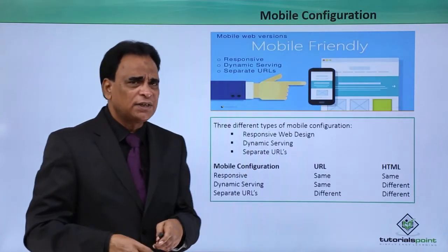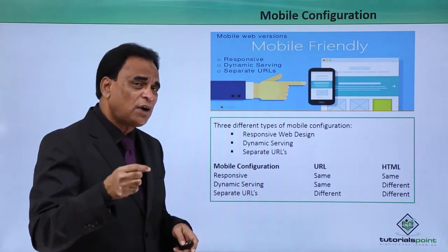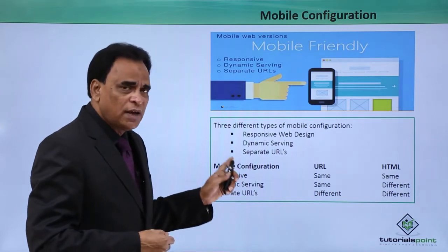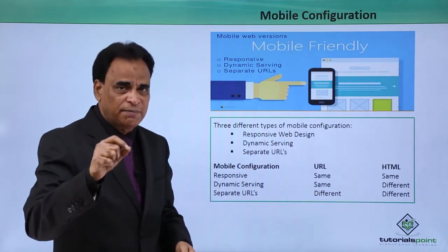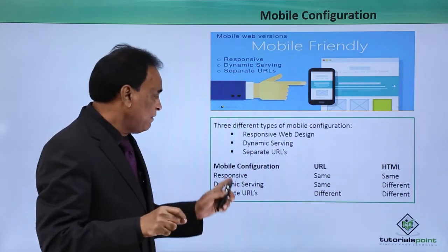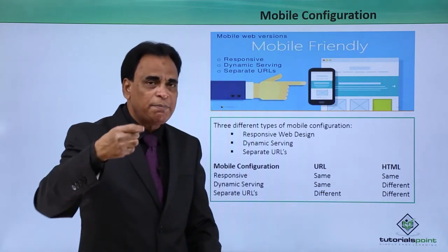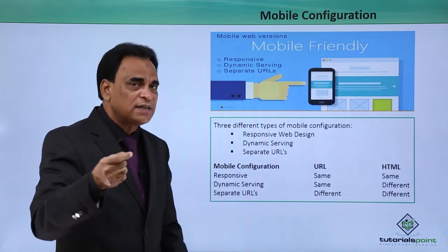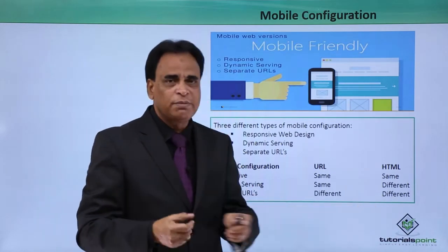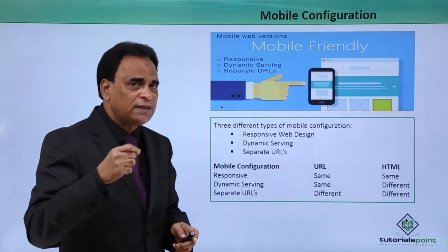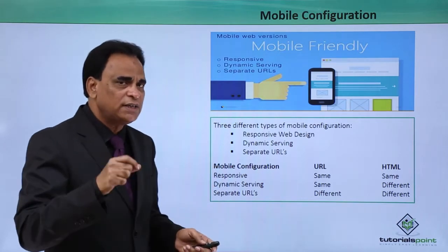What is mobile configuration? There are three factors to consider when talking about mobile configuration. One is responsive, where the URL and HTML pages remain the same. Second is dynamic serving, where the URL remains the same but a different HTML page is served. Third is separate URLs, where both the URL and the HTML are different. Let us go into each one and see how they work.